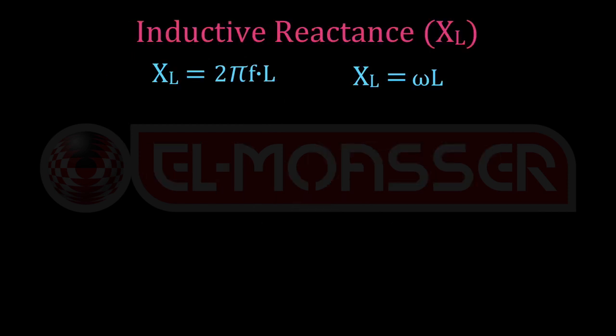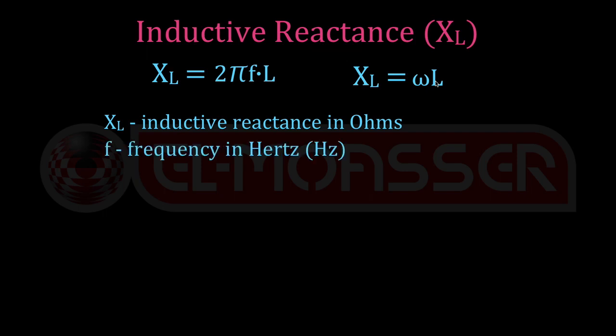The inductive reactance is measured in ohms. The inductive reactance is determined from the relation XL equals 2πfL or XL equals ωL, where XL is the inductive reactance in ohms and f is the frequency of the current.